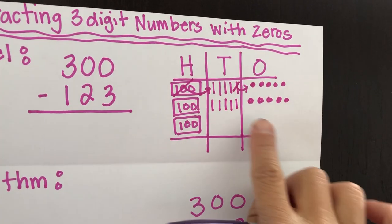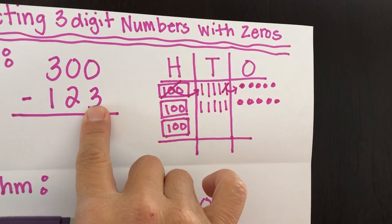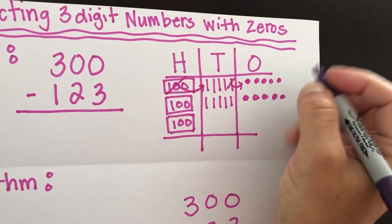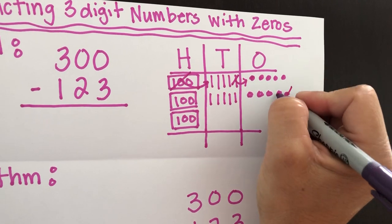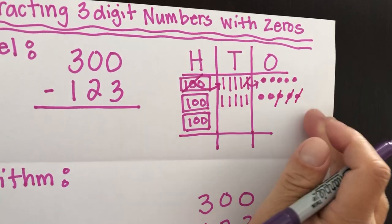So now that we have value in our tens and ones columns, we can subtract. So we're going to subtract three because that's what it says to do here. So we know how to do that. 1, 2, 3. When we subtract three.